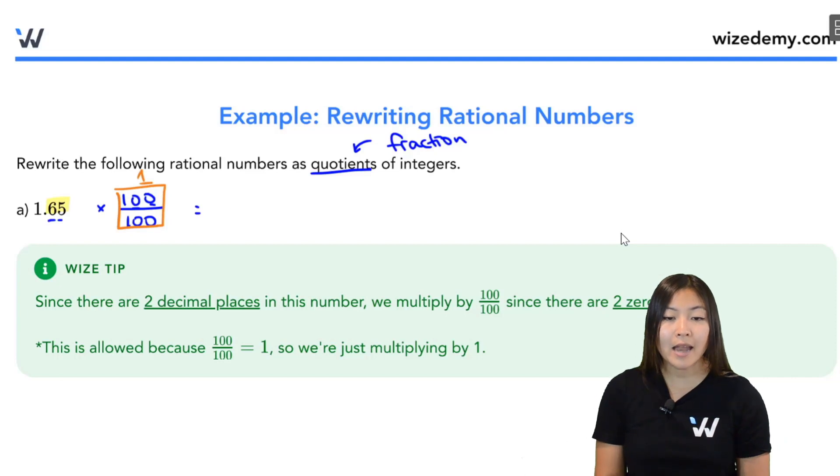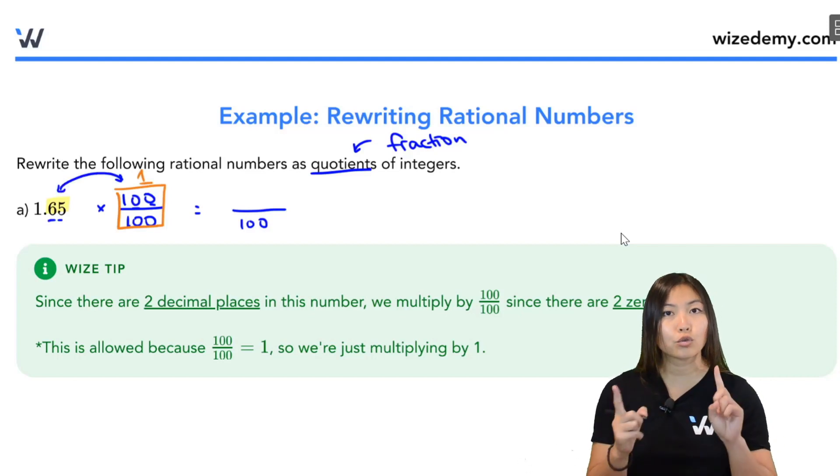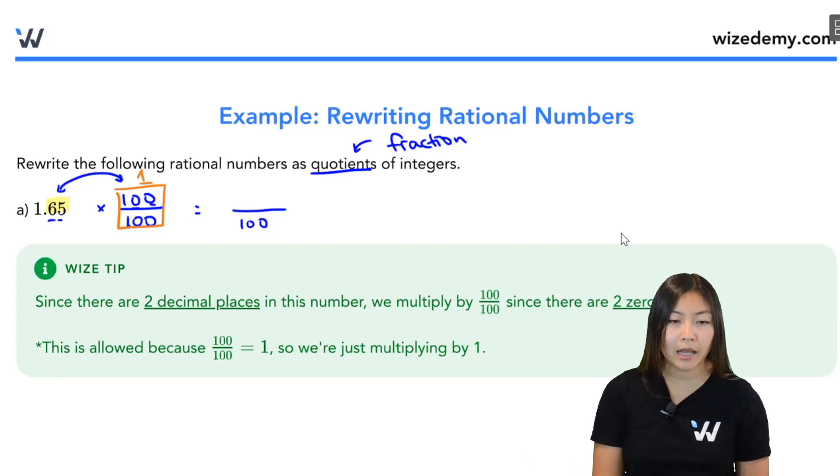But once I've done that, now I have this fraction. The bottom is just going to be the 100. The top, I'm going to use a little trick here. Whenever you're multiplying decimals with 10, 100, 1000, multiples of 10, you're going to trade every decimal place for a zero. So, I could technically move this decimal place one spot. That gets rid of one of the zeros. Move the decimal place another spot. That gets rid of another zero.